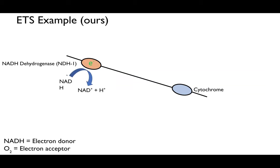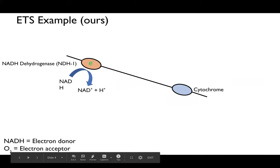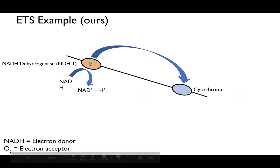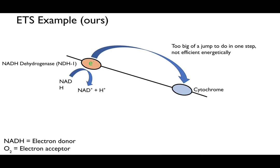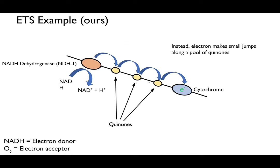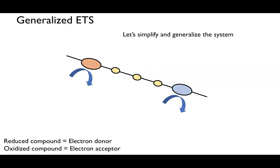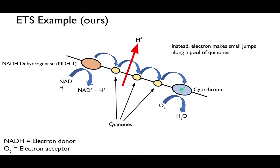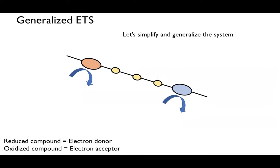We have energy molecule NADH as our electron donor — it donates an electron to the dehydrogenase, becoming NAD+, and then these electrons are passed down the chain to the cytochrome. This isn't done in one step; it's done in multiple steps via a pool of electron acceptors called quinones. Ultimately the electron is passed to the final cytochrome, which passes it to oxygen — our electron acceptor — creating water. Along the way we're generating a proton motive force, shuttling protons from the cytoplasm to the periplasmic space.